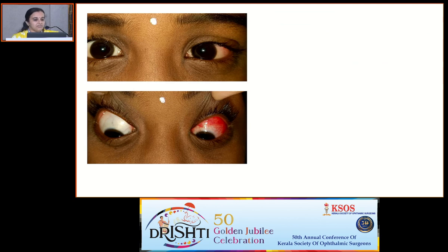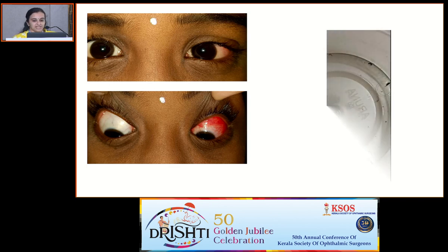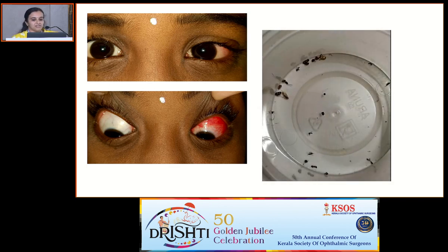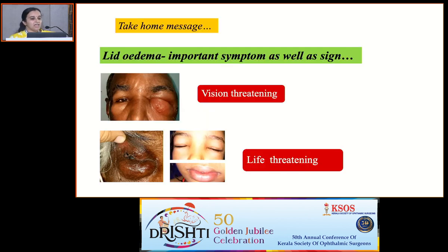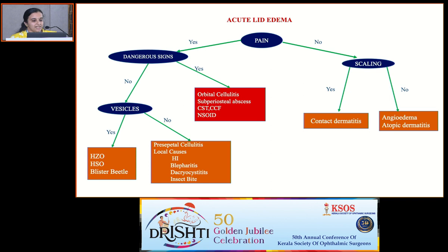An interesting case of a child in fourth standard presenting with upper lid edema and congestion in the superior bulbar and fornical conjunctiva. Her mother brought a bottle full of different varieties of insects, and she revealed a history of keeping insects in the fornix to induce conjunctivitis — the motive being to avoid exams. So lid edema can be an important symptom as well as a sign. It can be life-threatening or even vision-threatening. We should always have a systematic approach to reach the diagnosis and give prompt treatment.